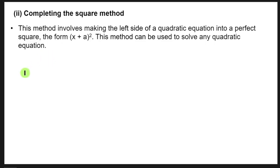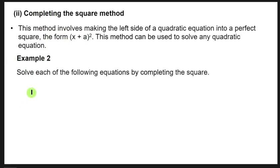The completing the square method involves making the left side of a quadratic equation into a perfect square of the form (x + a)². This method can be used to solve any quadratic equation, unlike the factorization method which can only solve certain quadratic equations. Let's look at examples.